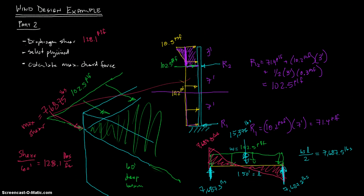So we've got that. We also want to select the plywood. To select plywood, you just go to a table. We've already got our max shear, it's 128.1, and then we go to it. It's actually reproduced the table that we want to use on page 98, and it's table 23-I-J-1. You want to go to your max shear.